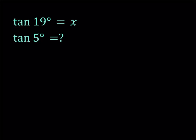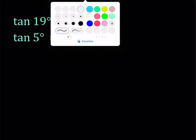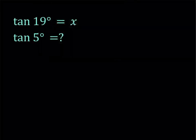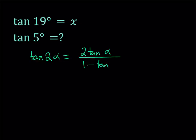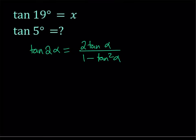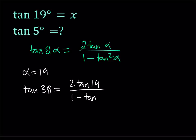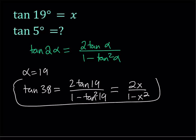Let's start with doubling the 19 degrees — that gives me 38. The double angle formula is: tangent 2α equals 2 tangent α divided by 1 minus tangent squared α. Using this with α equals 19 degrees, tangent 38 equals 2 times tangent 19 divided by 1 minus tangent squared 19. Since tangent 19 equals x, this becomes 2x divided by 1 minus x squared. So we now have the value of tangent 38 in terms of x.